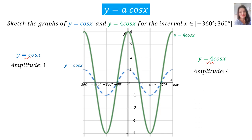You can see what happened — it was still the same critical points: 90, 180, 270. It's just that suddenly your graph, instead of starting at 1, now it starts at 4, at the point (0, 4), and it turns at the point 180 degrees and negative 4. The amplitude is 4.